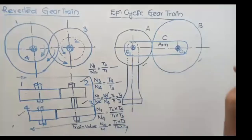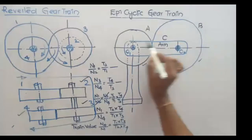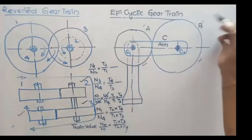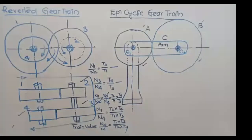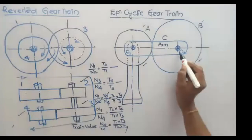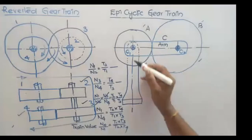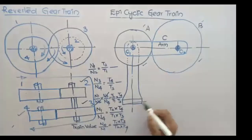Let us take two gear wheels A and B, both having external contact — these are external type gear drives. They are connected by an arm C. A is a gear wheel, B is also a gear wheel, and C is the arm used to connect the two gear drives. O1 and O2 are the centers of gear wheels A and B respectively. Gear wheel A is fixed to a frame — let us take this as a fixed frame.